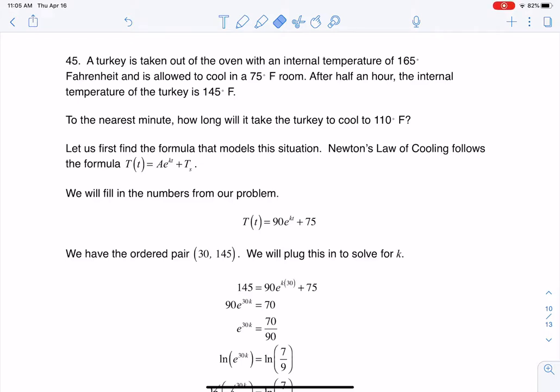Hey Math 31, I had a question coming out of section 6.7, number 45. Here we were told that a turkey is getting taken out of an oven, and we can see it has an initial temperature of 165 degrees. It's in a room that's 75 degrees, and a half hour later the turkey is down to 145 degrees Fahrenheit.